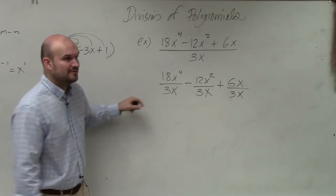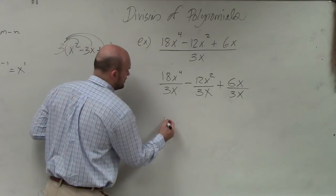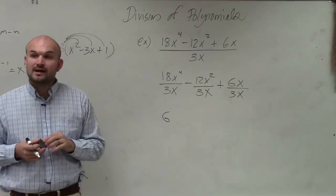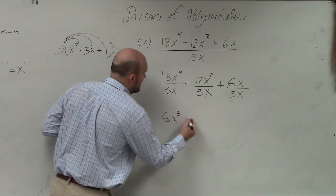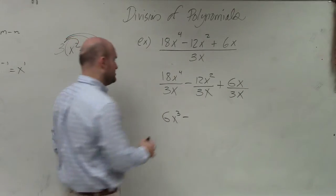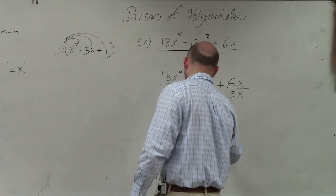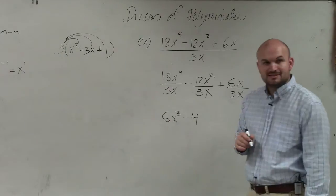So now, 18 divided by 3 is 6. x to the fourth divided by x is going to be x cubed. Minus 12 divided by 3 is 4. x squared divided by x is x.